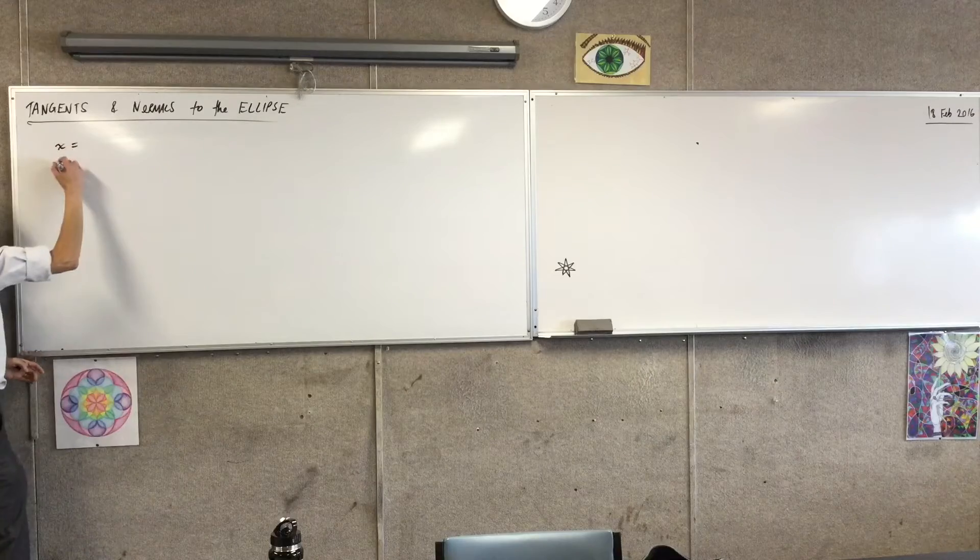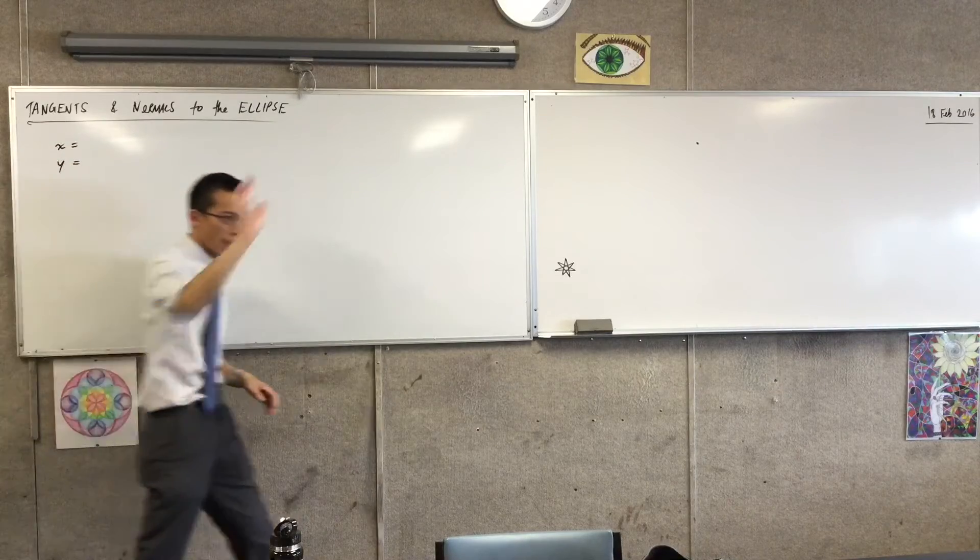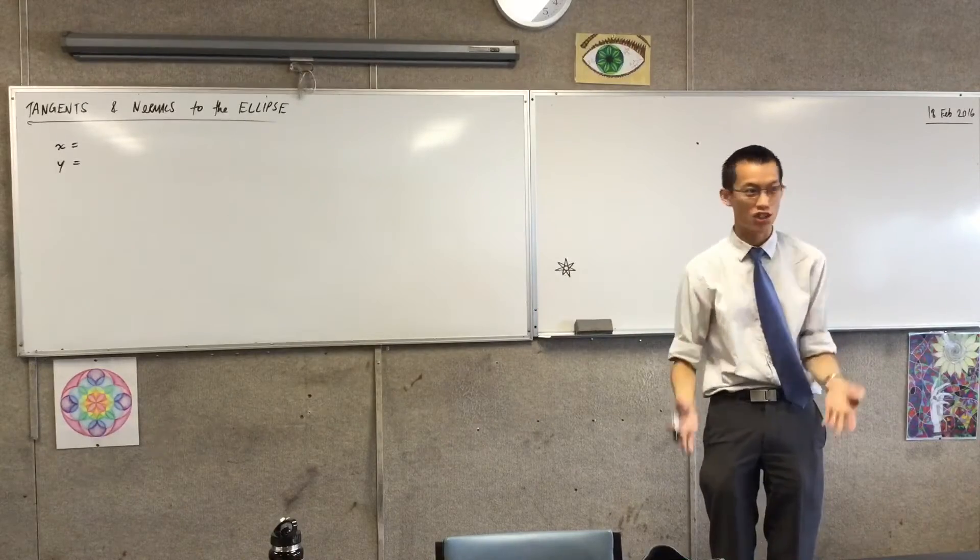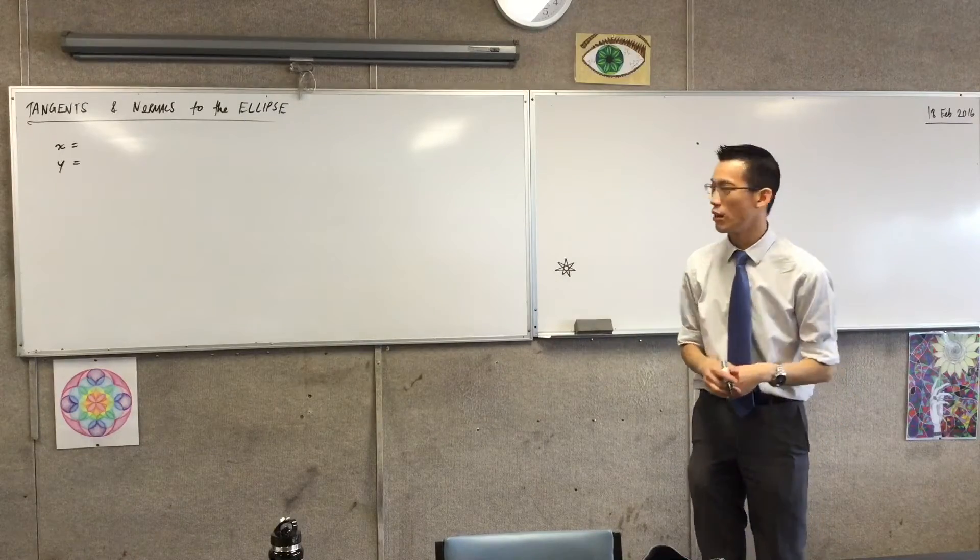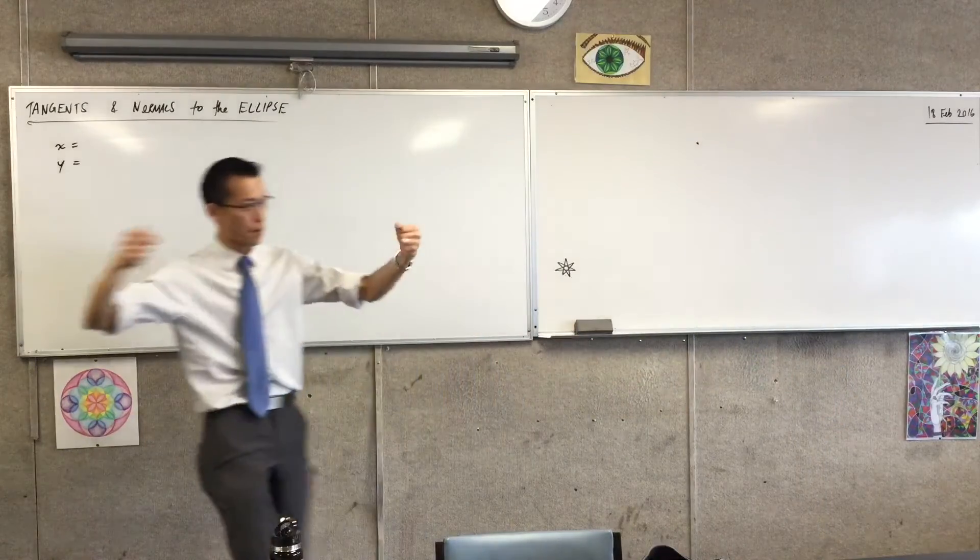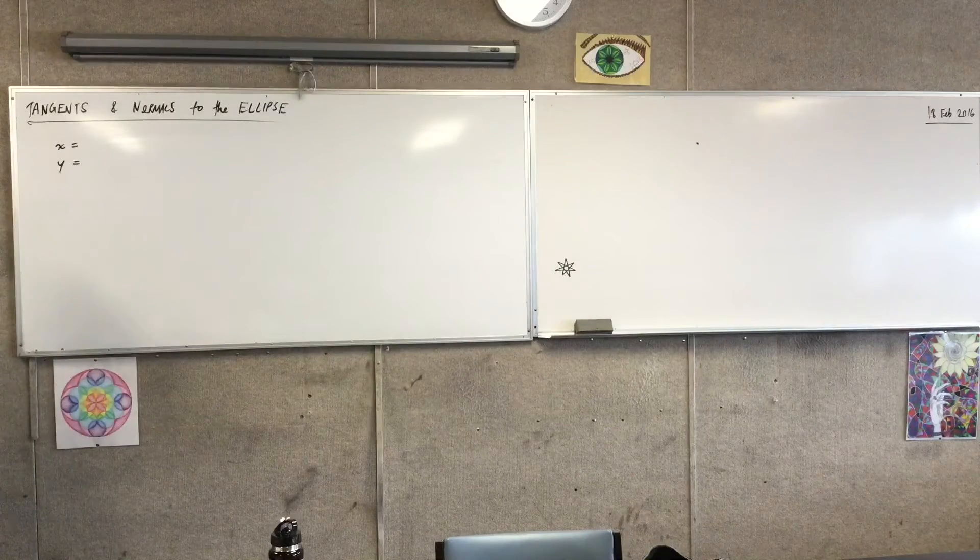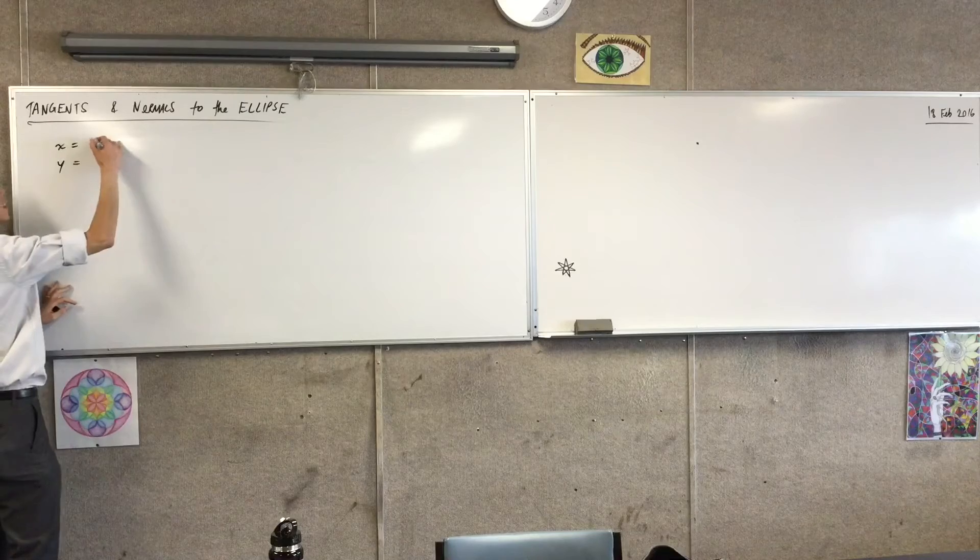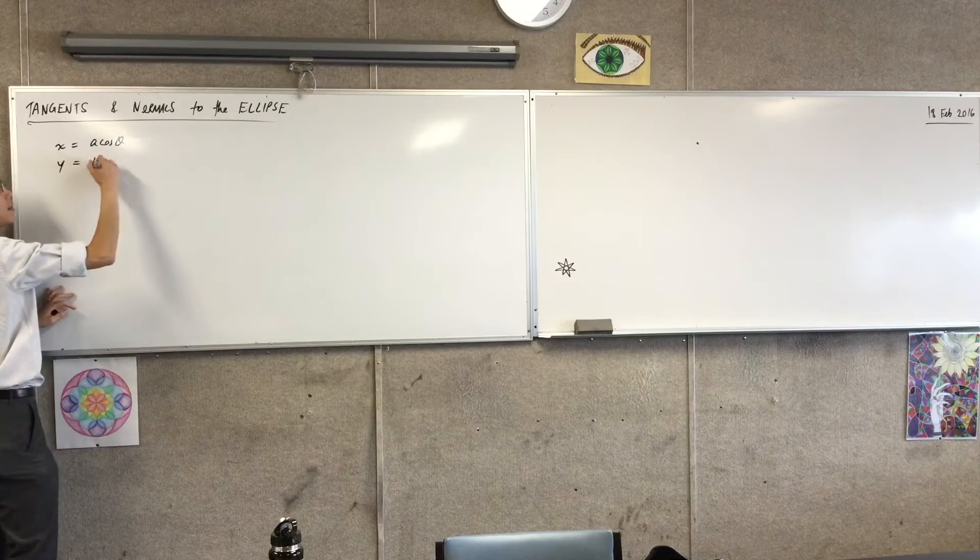And the parametric equations for the ellipse, x equals, y equals r, well you remember they're so much like the circle. The only difference is that there's different proportions horizontally and vertically. So, what were our parametric equations? Do you remember? A cos θ and B sin θ. Excellent.